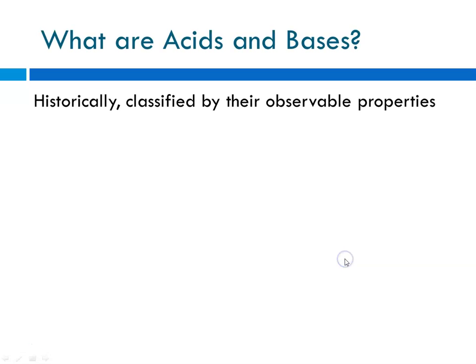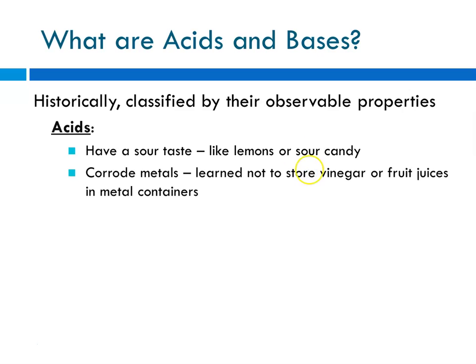Let's start. Historically, acids and bases are classified by their observable properties. In general, acids were considered to be things that have a sour taste, like lemons or sour candy. They are known to corrode metals, and people learned fairly early on that it's a bad idea to store vinegar or fruit juice in a metal container because it eats it. And they also were observed to change blue litmus dye to red.